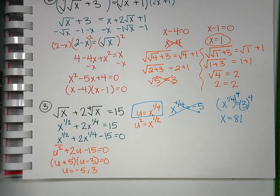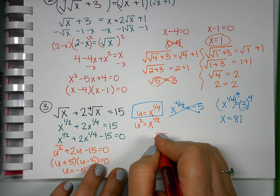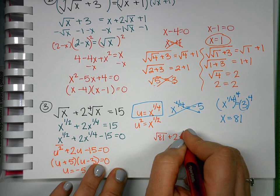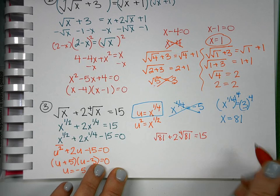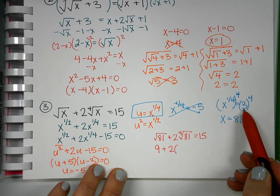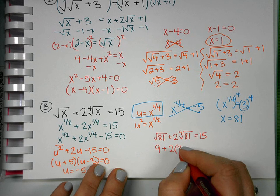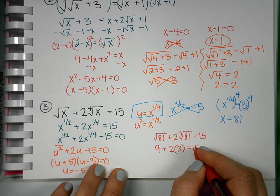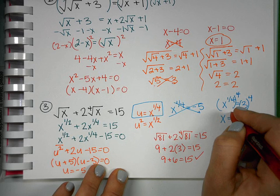Just like before, we do want to check our solutions because we do have radicals in here. If we were to check our solution, the square root of 81 plus 2 times the 4th root of 81, does that equal 15? The square root of 81 is 9. The 4th root of 81, well we kind of just did that right here. 3 to the 4th is 81, so the 4th root is 3. Does 9 plus 6 equal 15? Yes, so that would be our only solution.